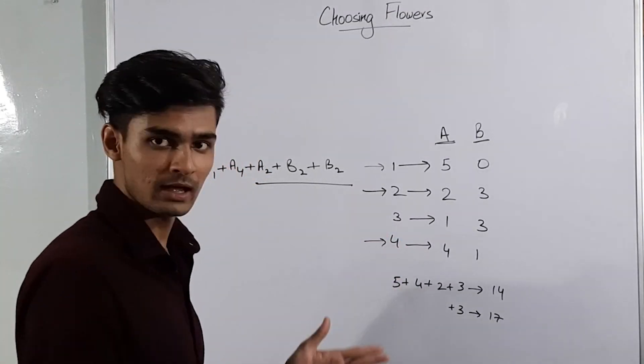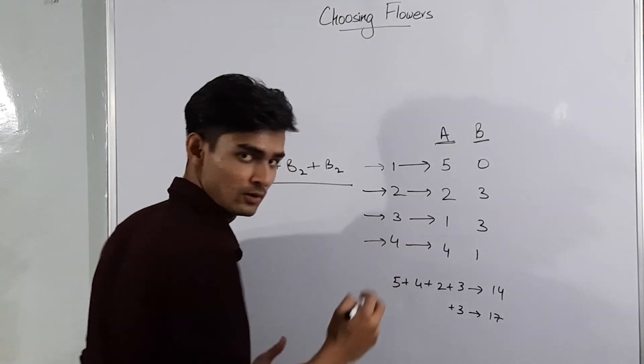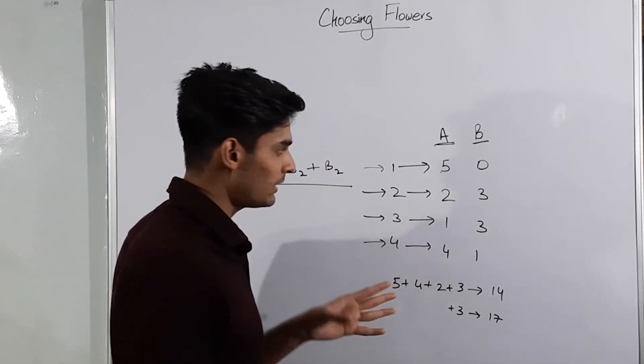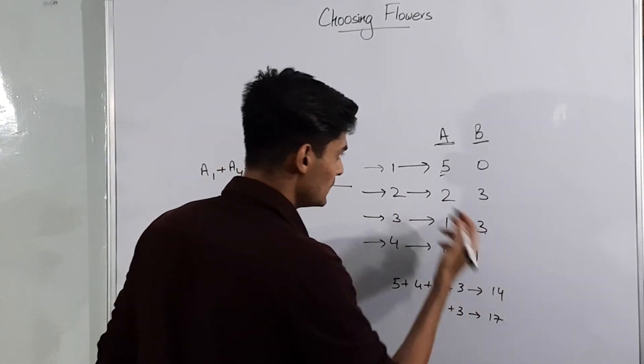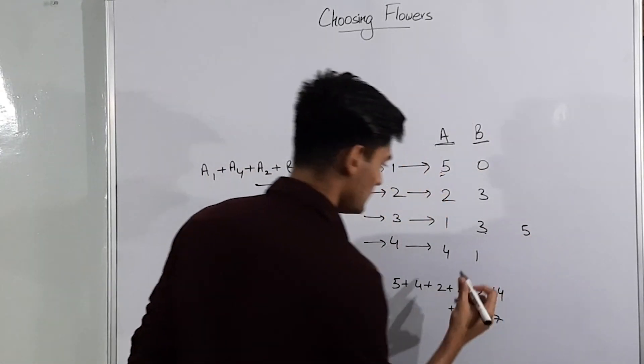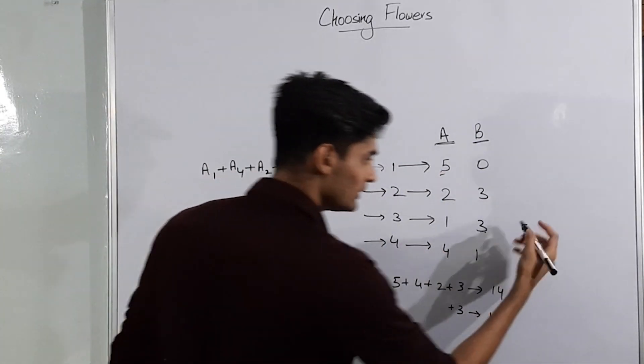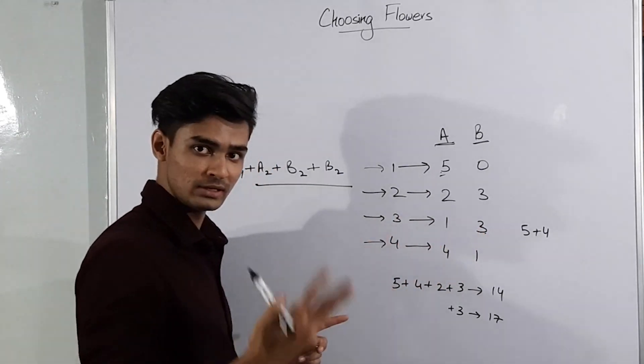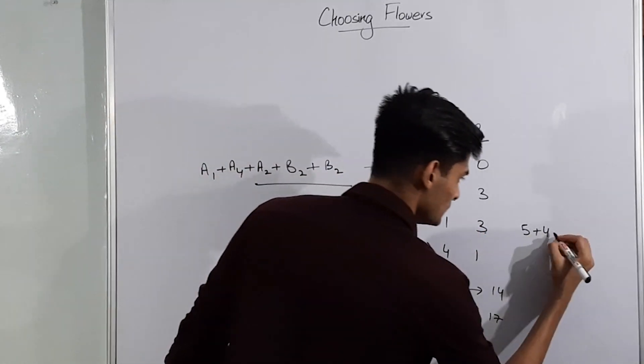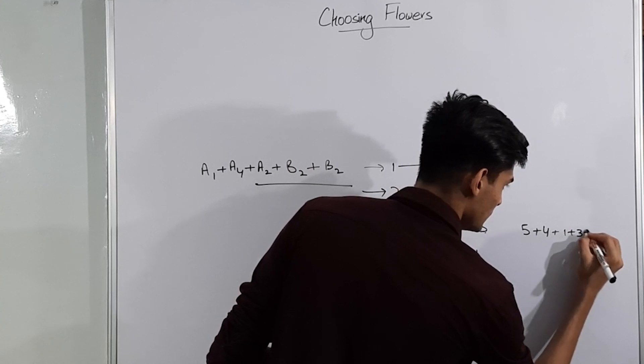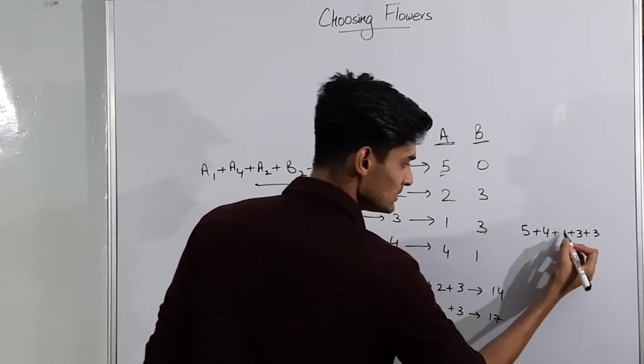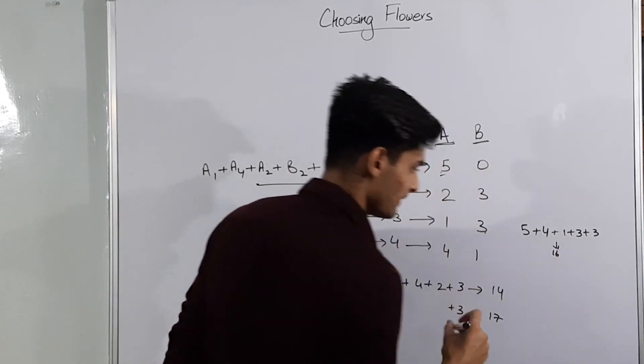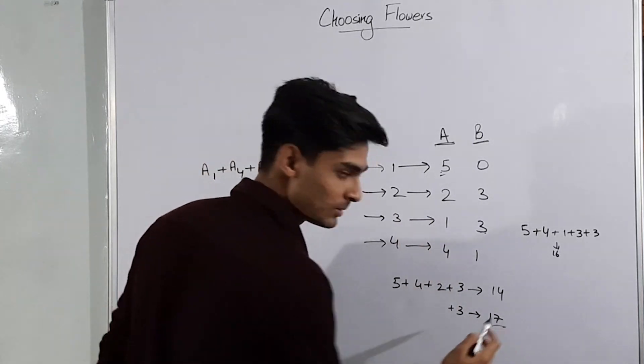Now let's try to fix some other flower, let's say we fix this flower now. Now we know that this 5 is greater than 3, therefore we will take 1 from the first type. This 4 is greater than 3, therefore we will take 1 from the fourth type. And then 2 is smaller than 3, therefore we will take all the rest 3 from the third type only, therefore plus 1 plus 3 and 1 more 3. So this gives us 16, but we know that 17 is the optimal answer.